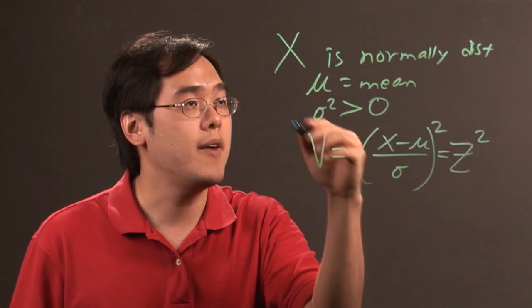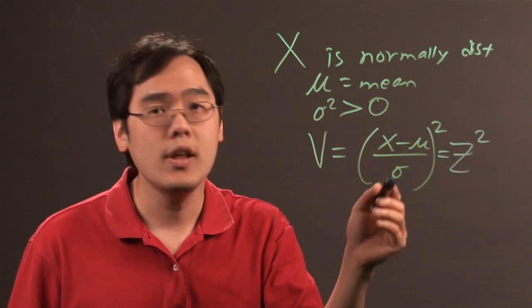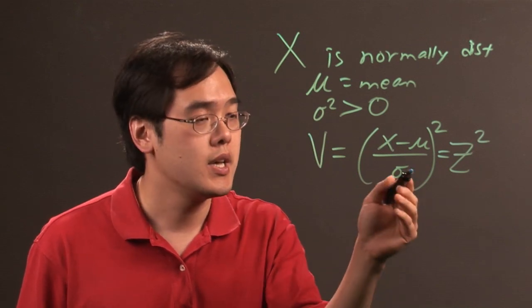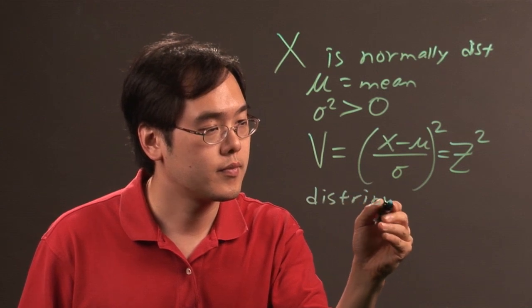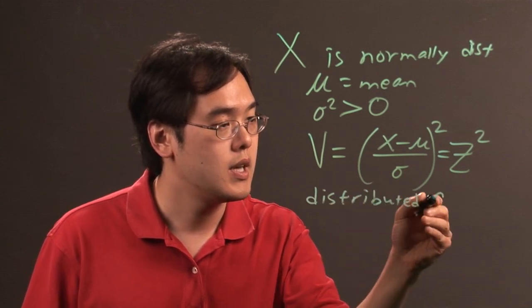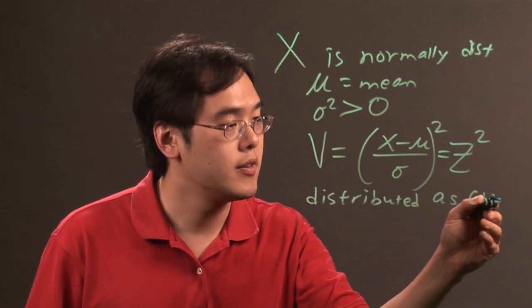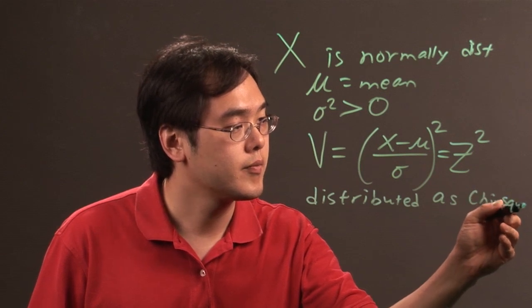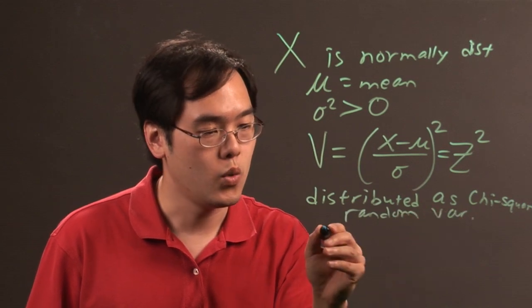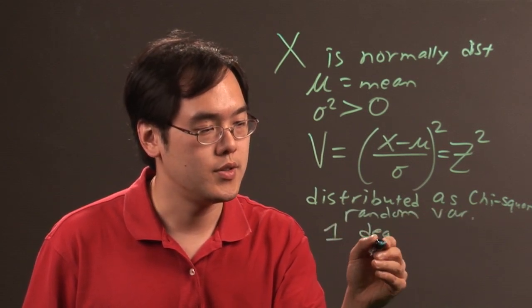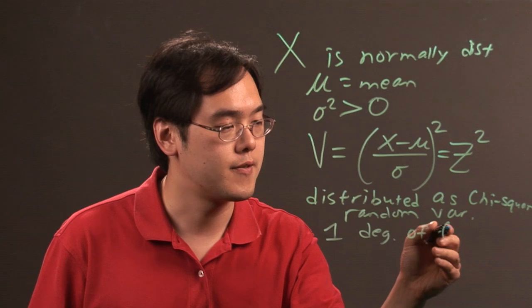then if you have the scenario, then what the theorem talks about is that this is distributed as a chi-square random variable with one degree of freedom.